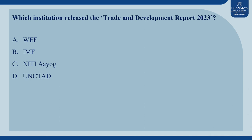Question No. 3: Which institution released the Trade and Development Report 2023? The options are A. WEF, B. IMF, C. Niti Aayog, and D. UNCTAD. The correct answer is D. UNCTAD.